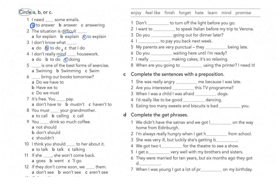Question five: '...is one of the best forms of exercise.' 'Is' is the verb, so before it we need the subject. A gerund can come as a subject — 'swimming' is a gerund, and we can use a gerund as a subject.